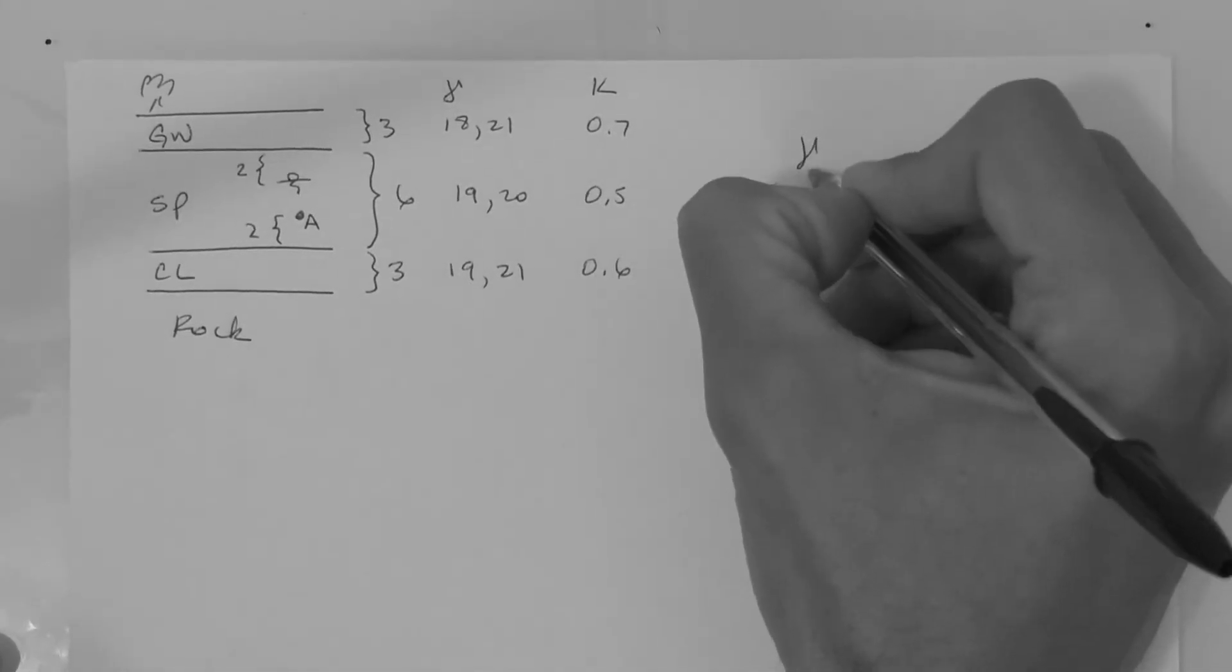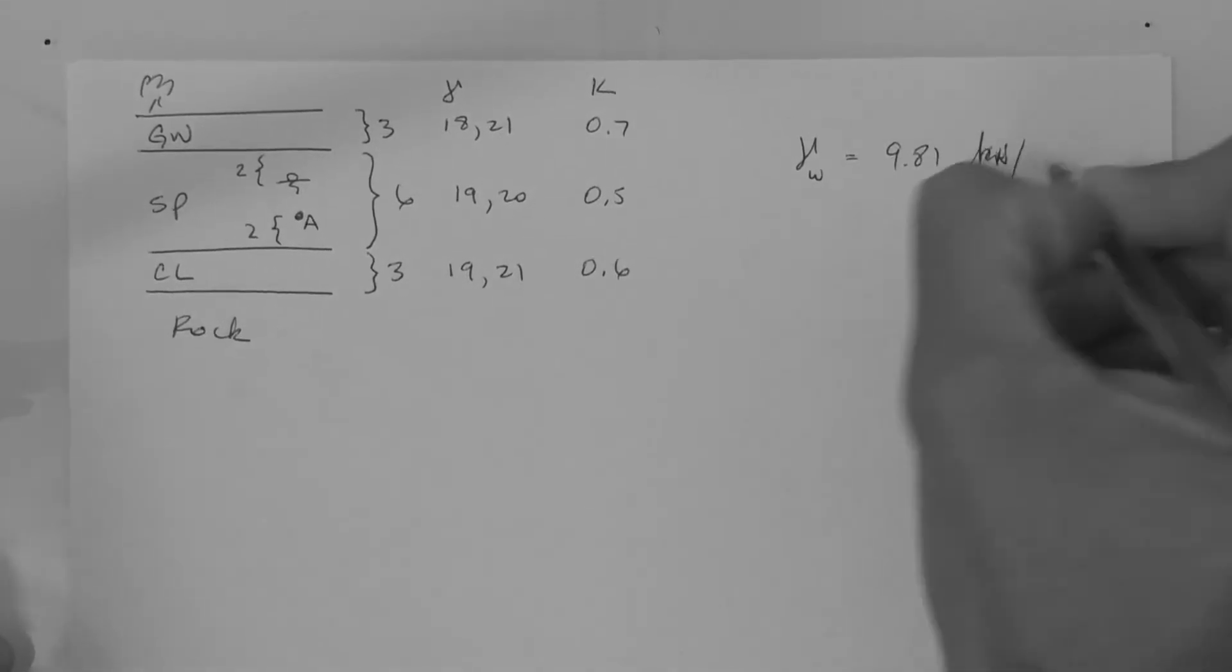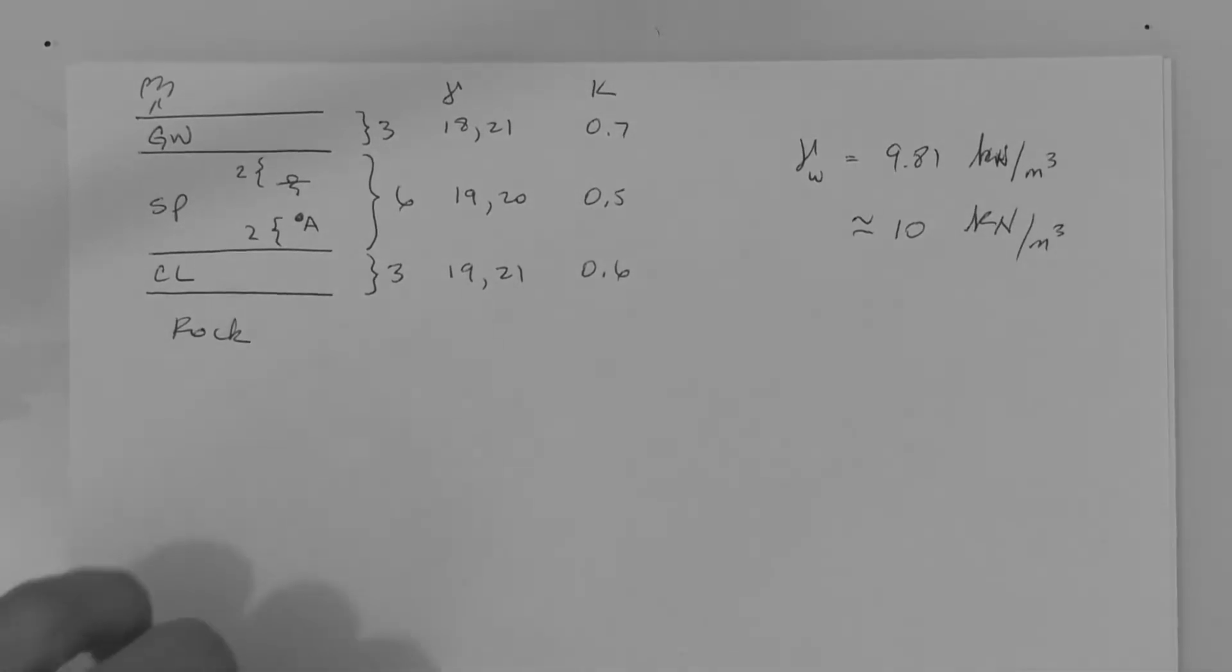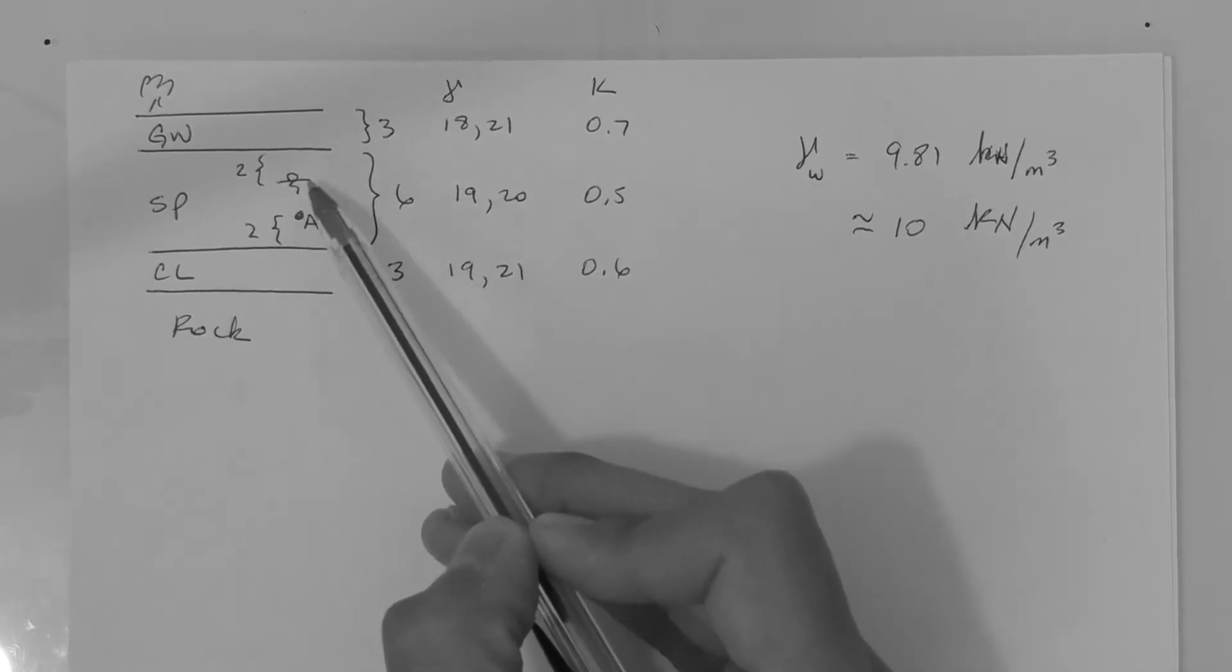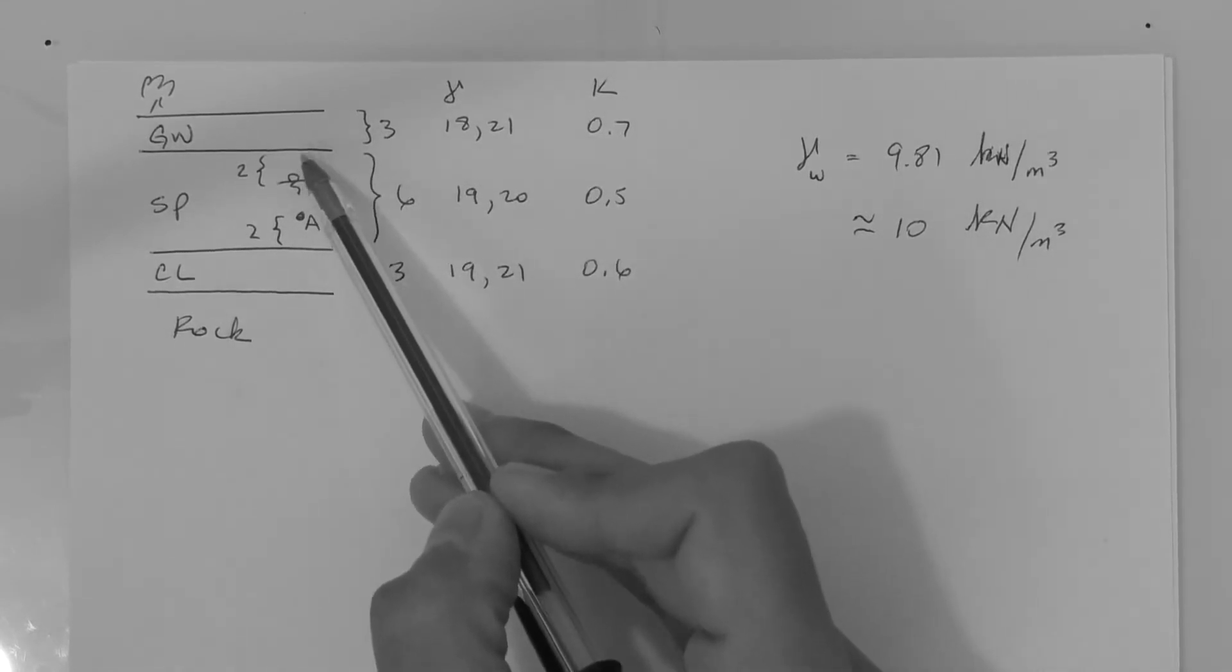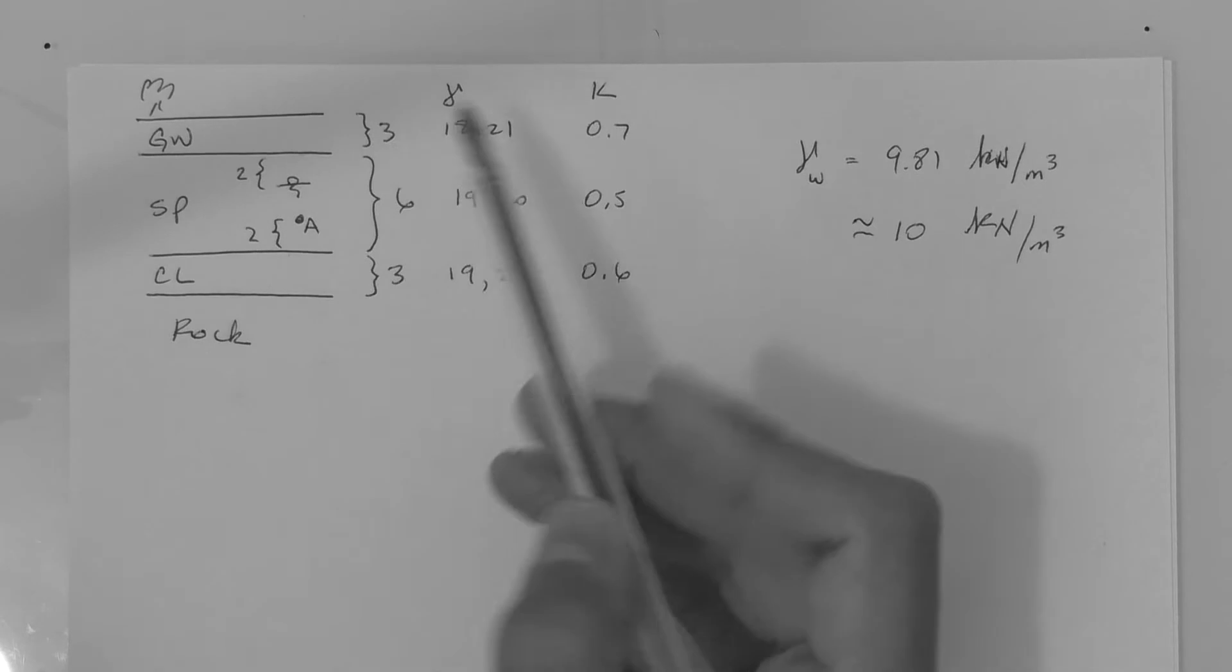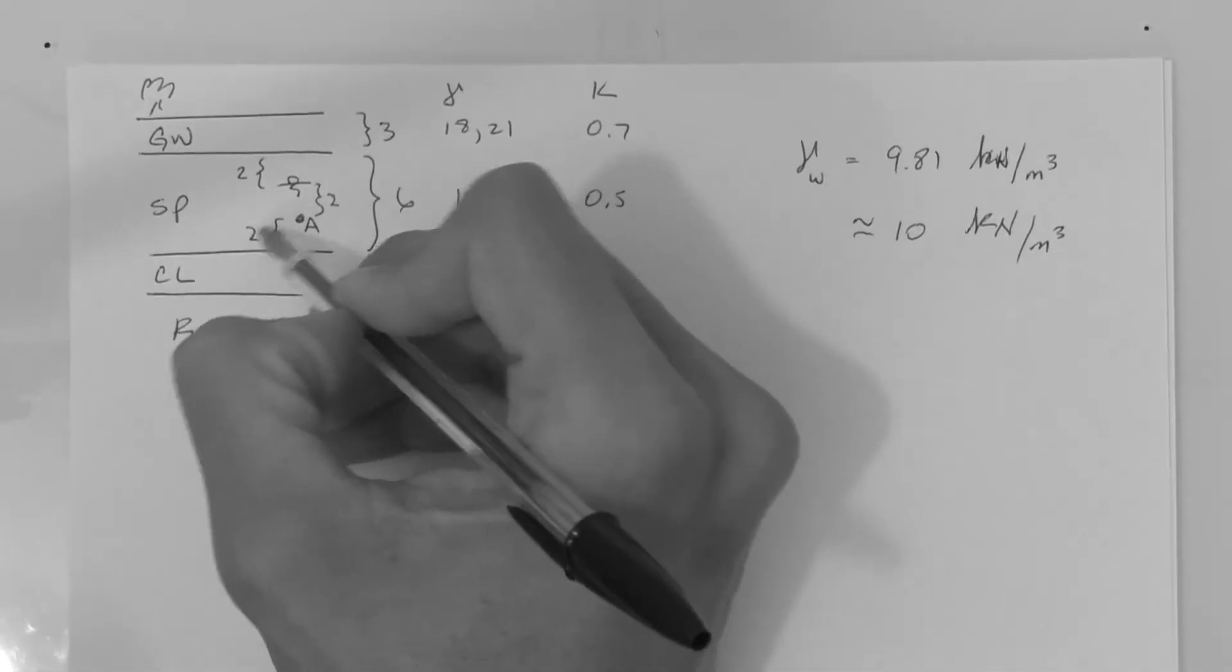The unit weight of water is 9.81 kilonewtons per meter cubed, but we are going to assume it's 10 just for ease of calculations. Point A is some distance below the water table. Since the entire sand layer is 6 meters thick, point A is 2 meters from the layer interface, and the water table is 2 meters below the gravel-sand interface, this distance must be 2 meters as well.